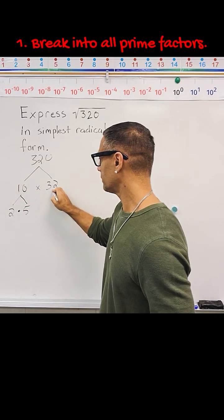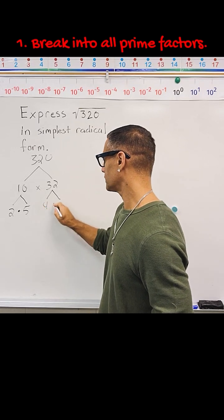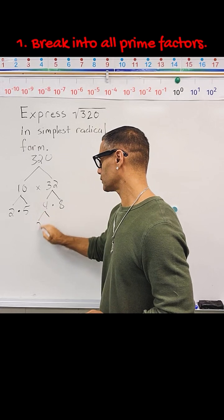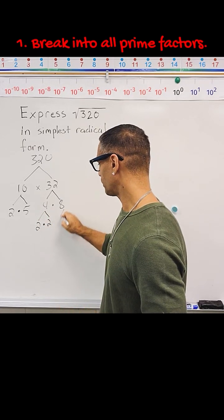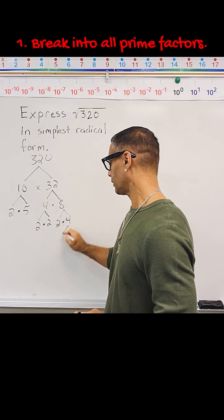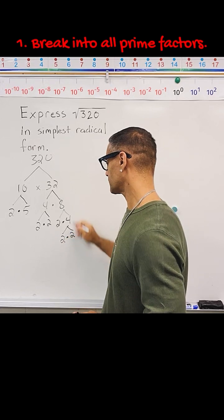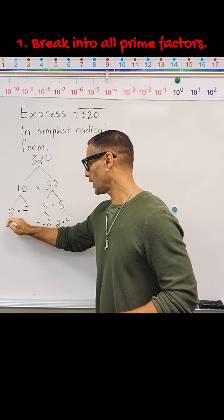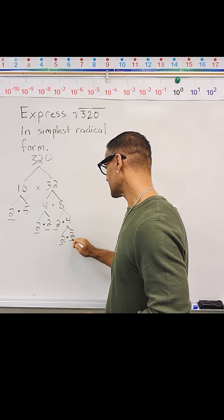Over here, I'm going to break 32 down into 4 times 8. Now 4 can be broken down into 2 times 2, which are each prime numbers. And 8 can be broken down into 2 times 4, and this 4 can be broken down into 2 times 2, which takes us to the end of our factor tree because we have all prime numbers. We have 1, 2, 3, 4, 5, 6 twos.